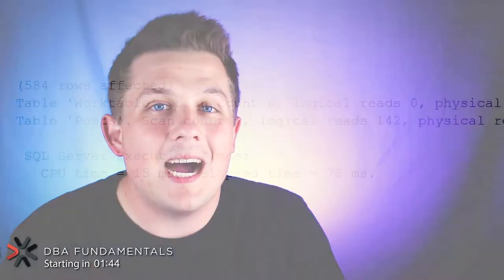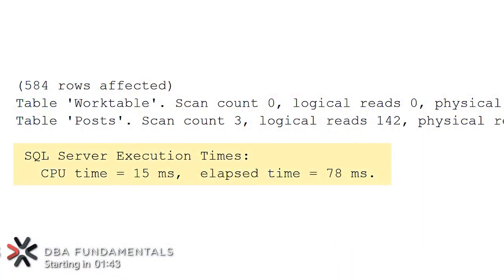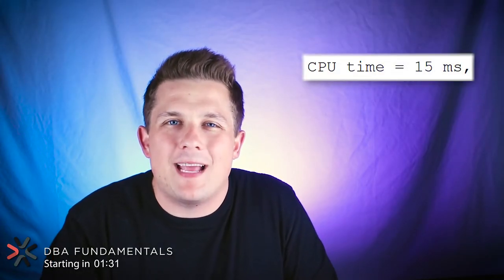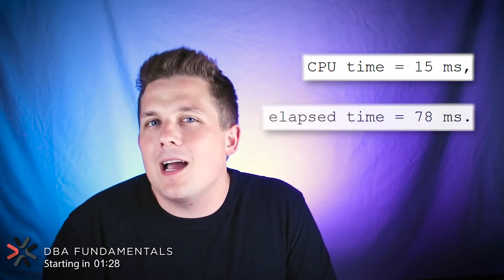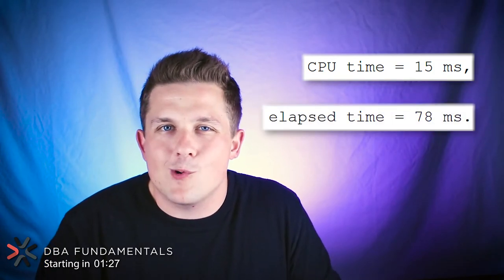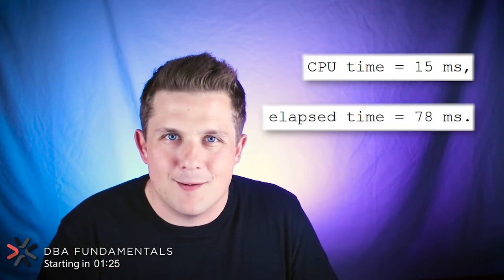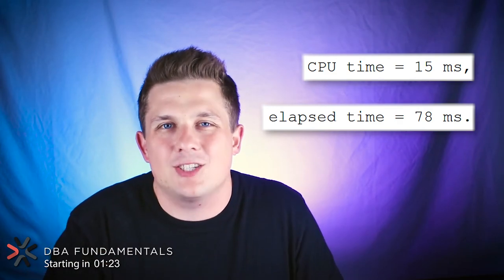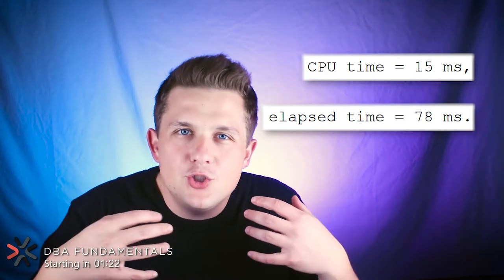The other thing we can look at are the time statistics that we turned on. These appear below the I/O statistics, where we can see the CPU time and the elapsed time that it takes for our query to run. The CPU time represents how long our query actually spent on the CPU, while elapsed time represents more of your wall clock time — how long that query actually took to run.